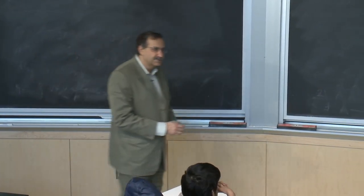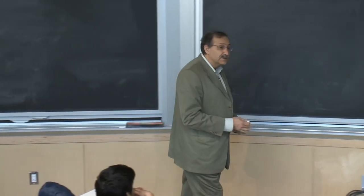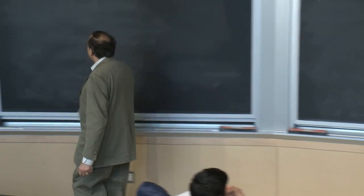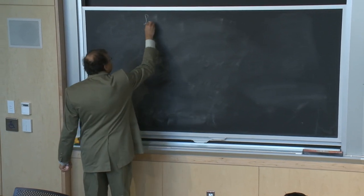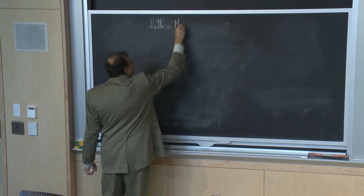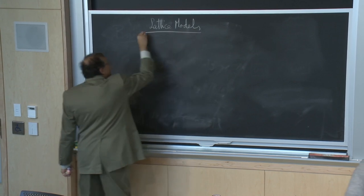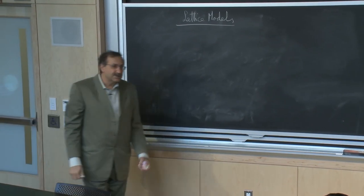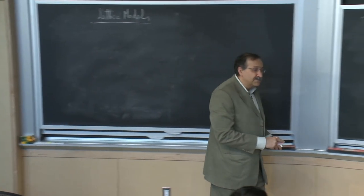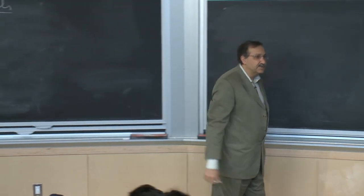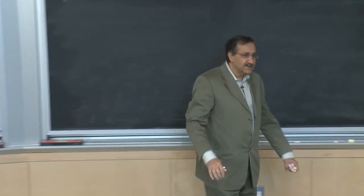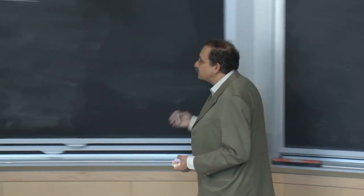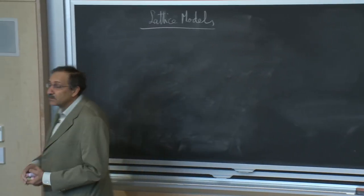Let's start. We are going to change perspective again and think in terms of lattice models. For the first part of this course, I was trying to change your perspective from thinking in terms of microscopic degrees of freedom to a statistical field. Now we are going to go back and try to build pictures around things that look more microscopic.